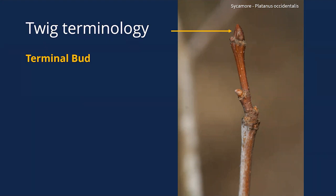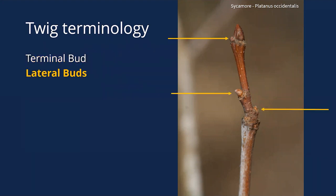The other buds along the sides of the twig are called lateral buds. Lateral buds are typically next year's leaves, but they can be flowers and even side shoots. They're also very important — they let us figure out bud arrangement, whether it's opposite or alternate. So we use lateral buds as well.